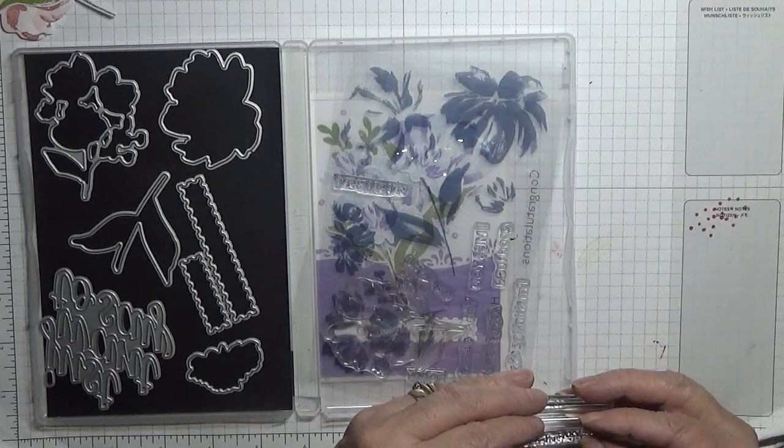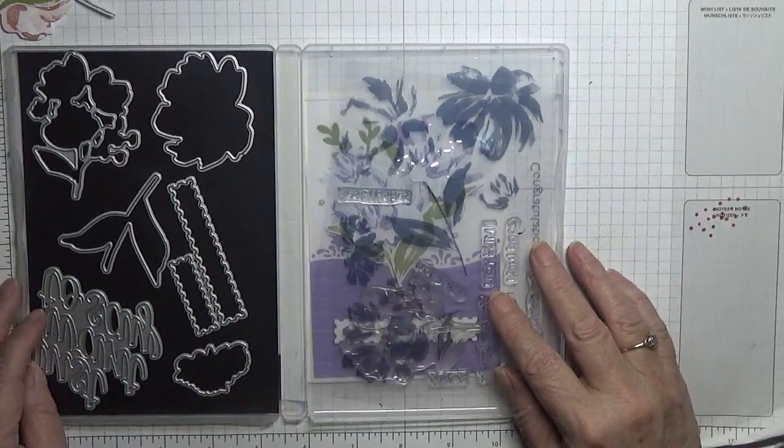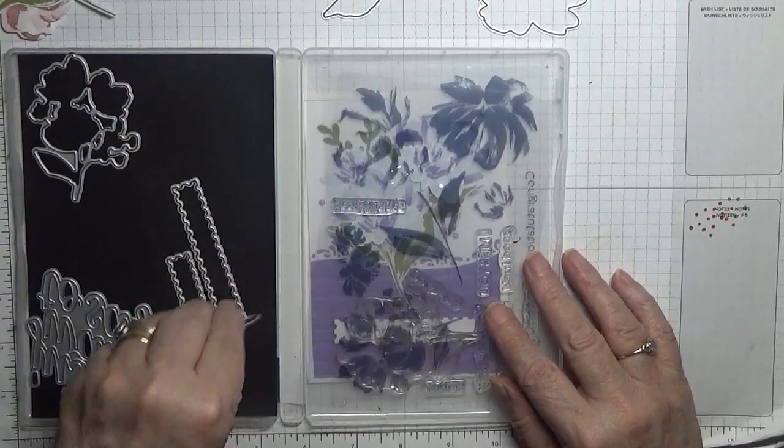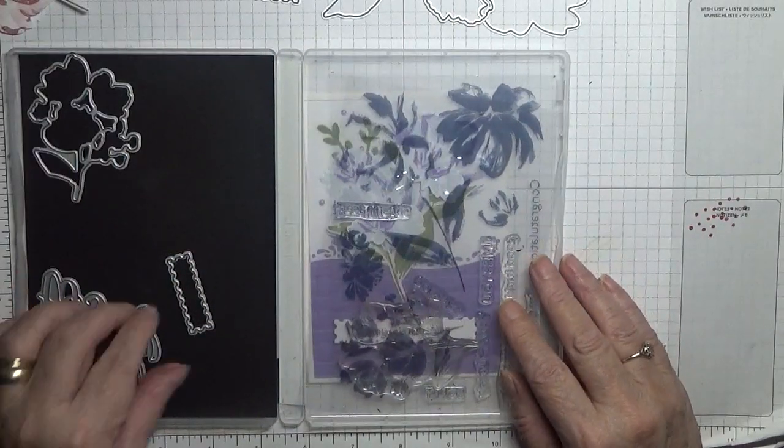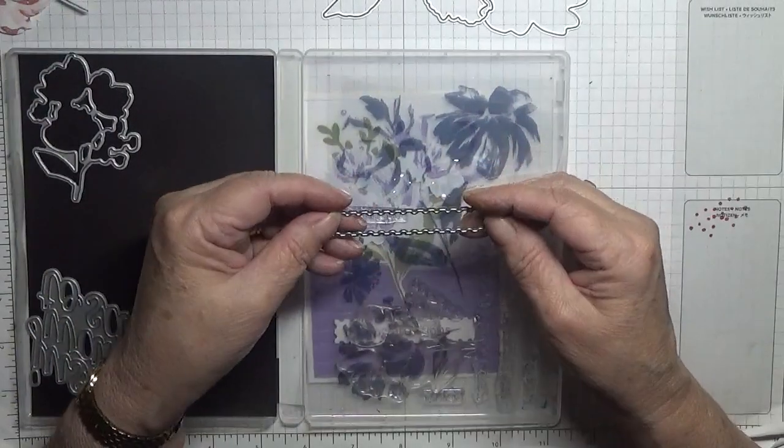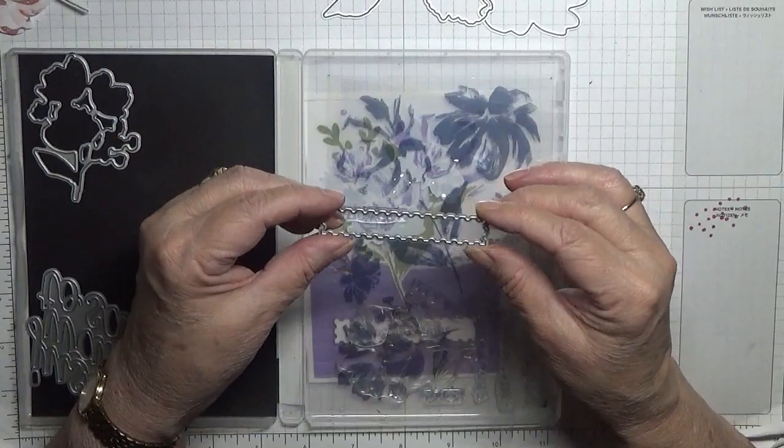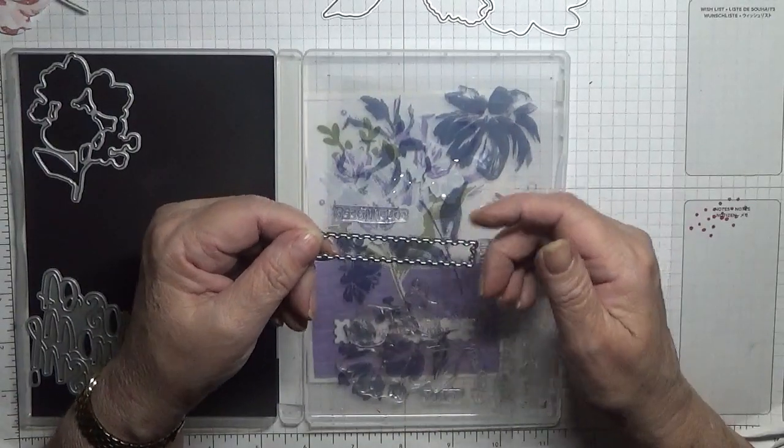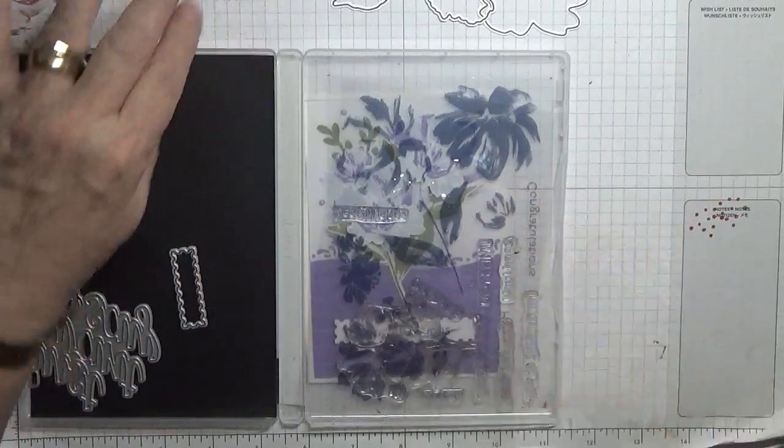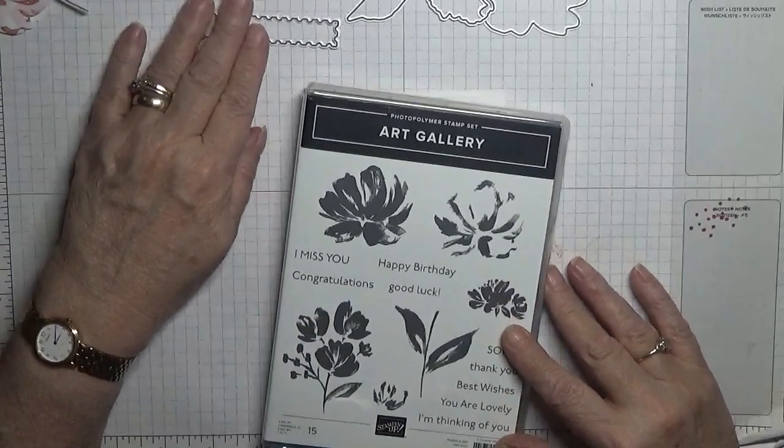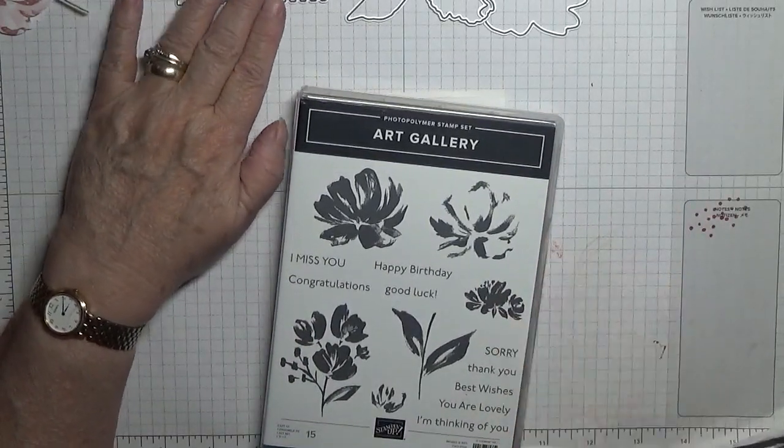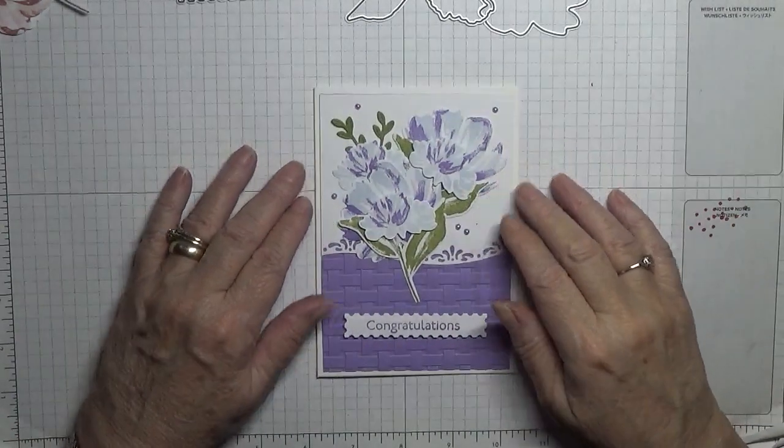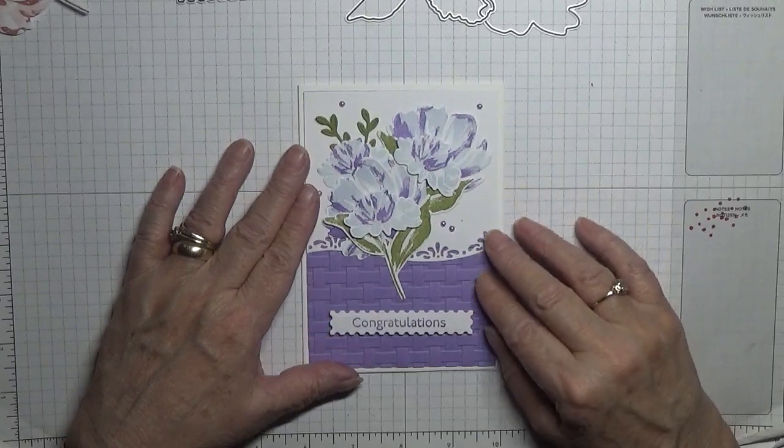We'll also be needing the leaf die, the big flower die, small flower die, and sentiment die. The other day I made a card with a rose on it and I cut out a sentiment. It looks like this one, but I didn't have this set when I made that card. Still don't know where that die came from. It must have come out of a different stamp set. That'll be bugging me. Anyway, get back to this one.